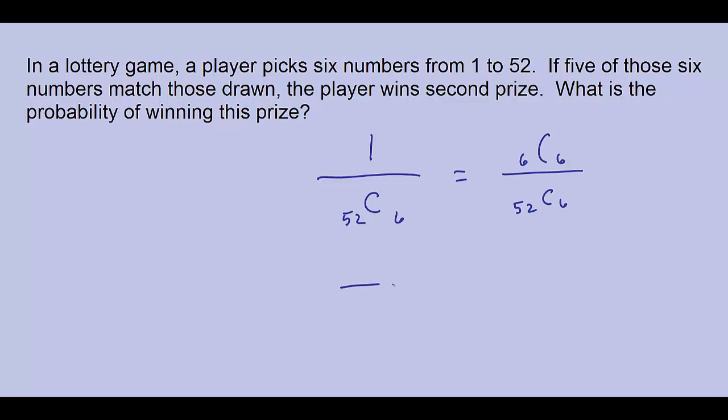So for my question, the denominator doesn't change. There's still 52 numbers in the bin and I'm still going to pick six of them, but now I win second prize if I get five out of those six. So all I need to do on my calculator is calculate 6 choose 5 divided by 52 choose 6, and when I do that I'll get 6 divided by 20,358,520. To illustrate this, say the winning numbers were 1, 2, 3, 4, 5, and 6.